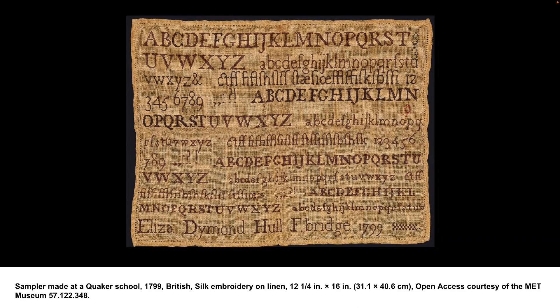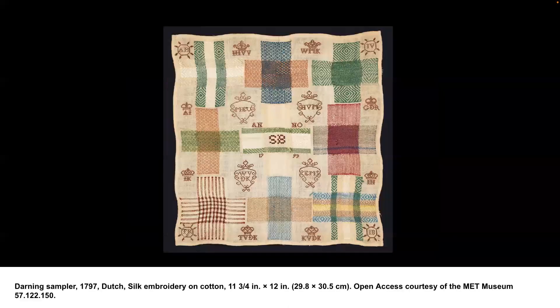Individuals usually had several samplers for different techniques, such as one for alphabet numbers like the one presented here from the late 1700s. These samplers were used to demonstrate mastery of needlework and could be used to teach others the same stitching techniques. Here's another example of a sampler from the late 1700s, this time for darning, showing different stitching techniques for mending holes in a garment. An individual would repeat the steps from someone else's sampler to learn how to mend their own garment, and this would also be used for reference later on.